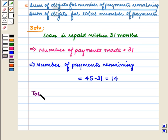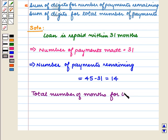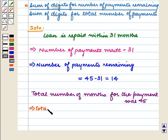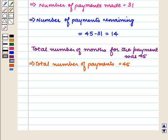Now the total number of months for the payment was 45, which implies total number of payments is equal to 45.